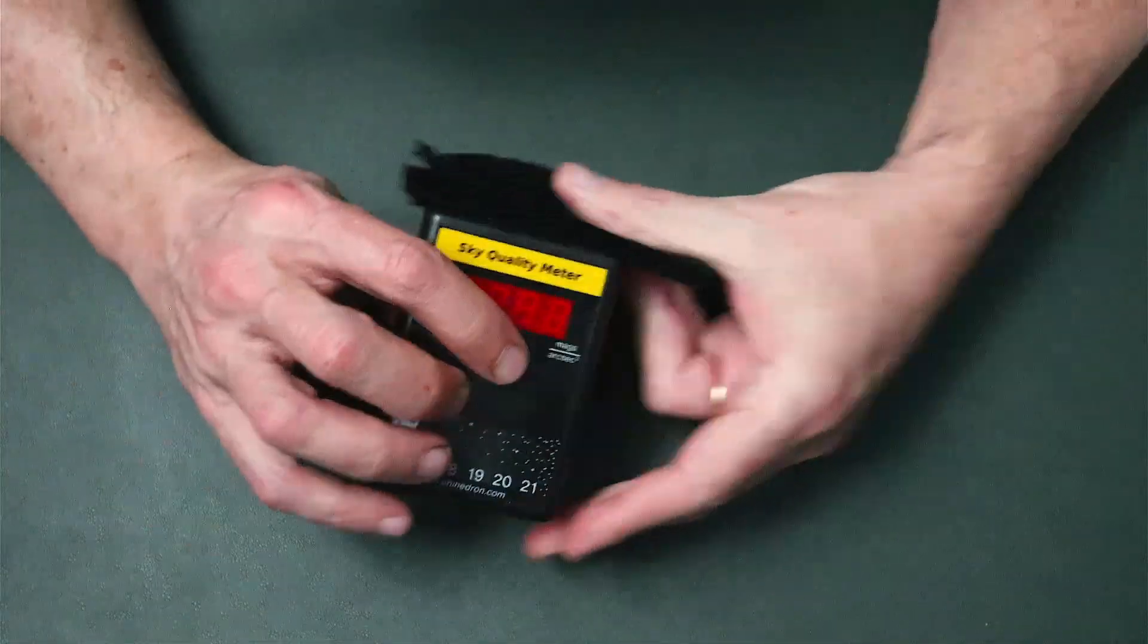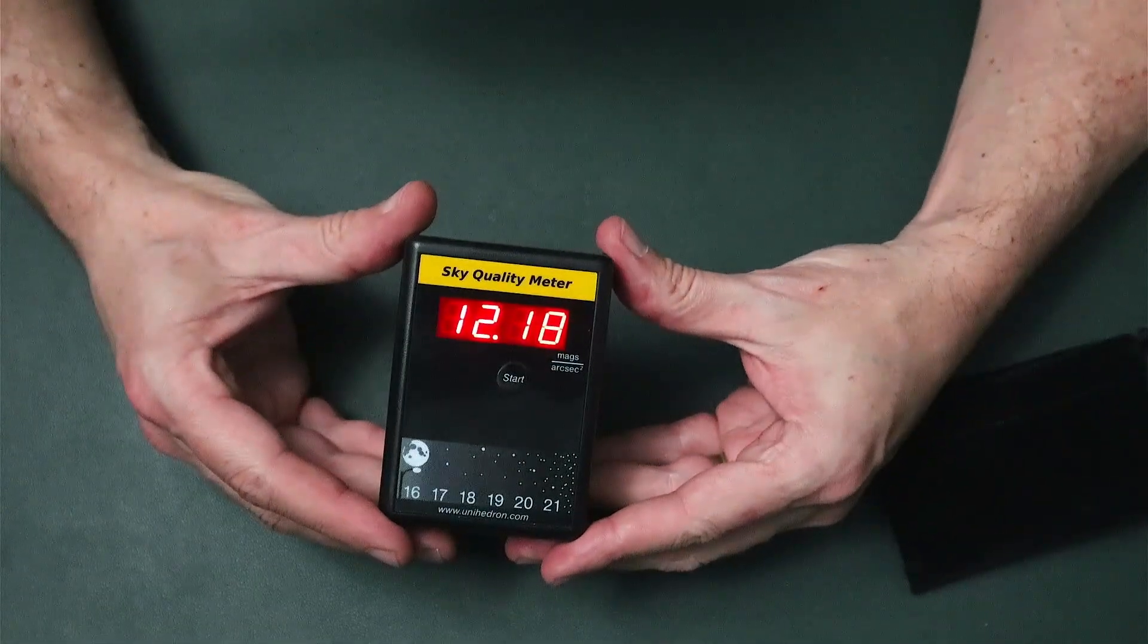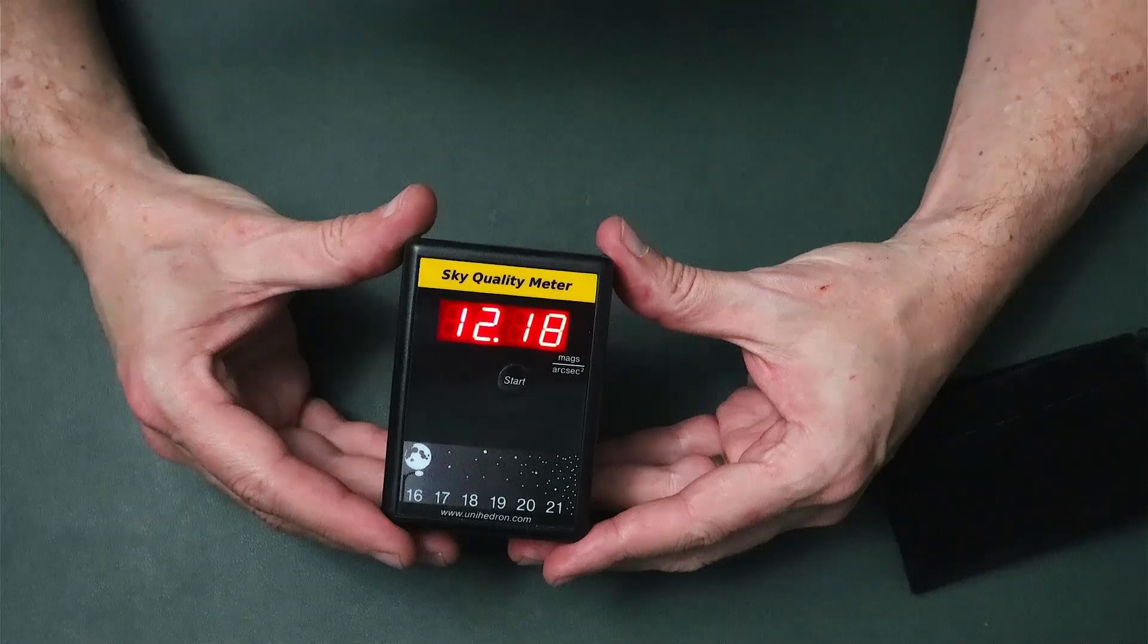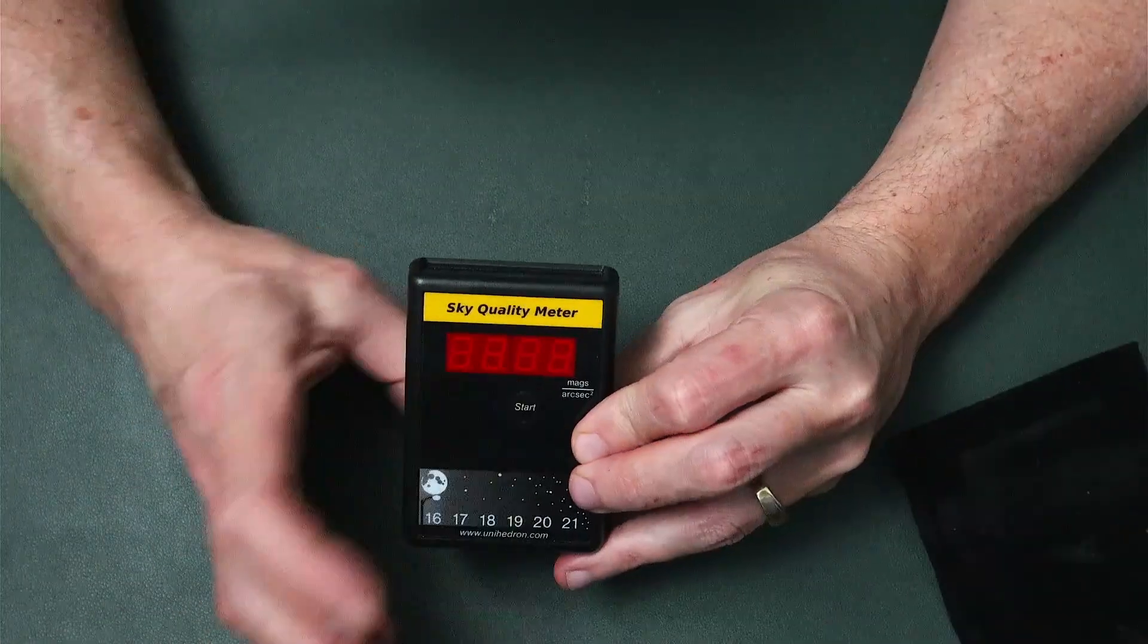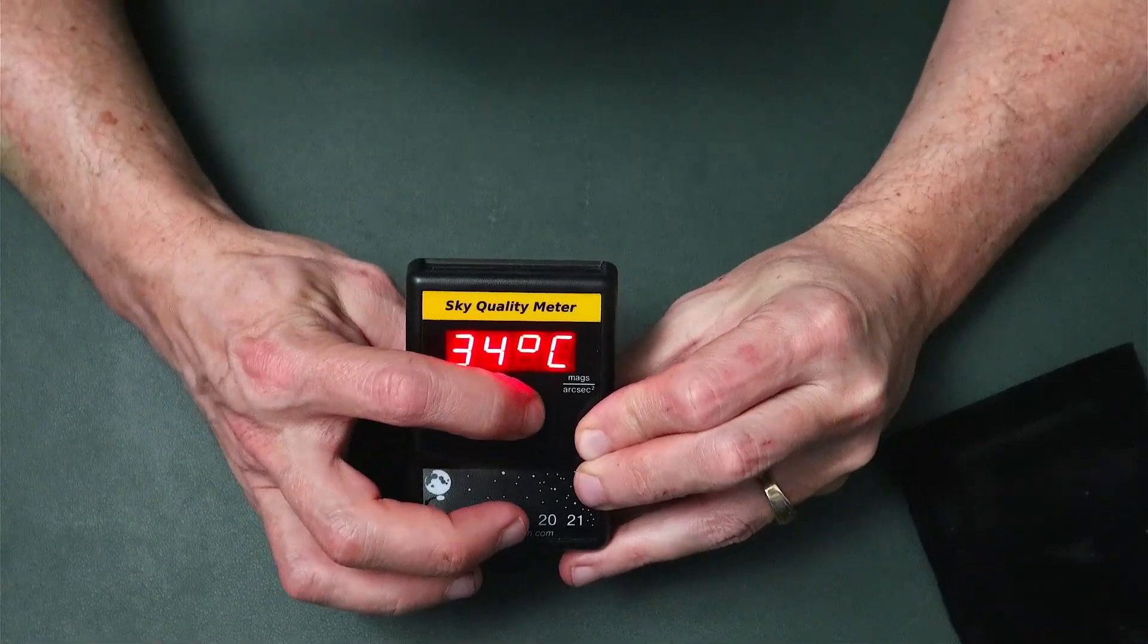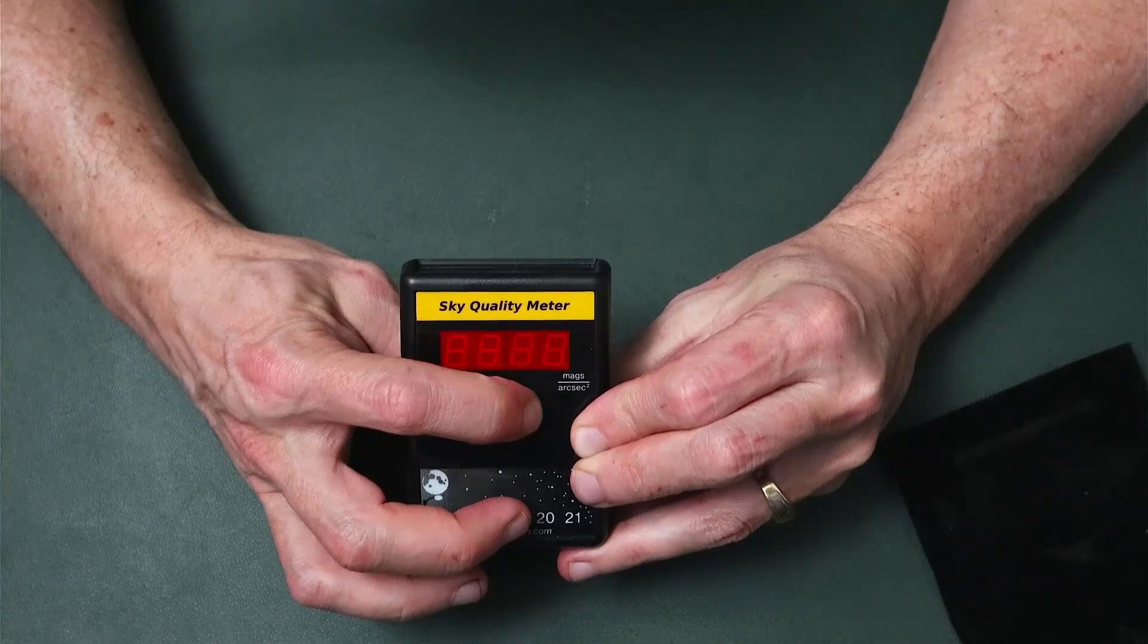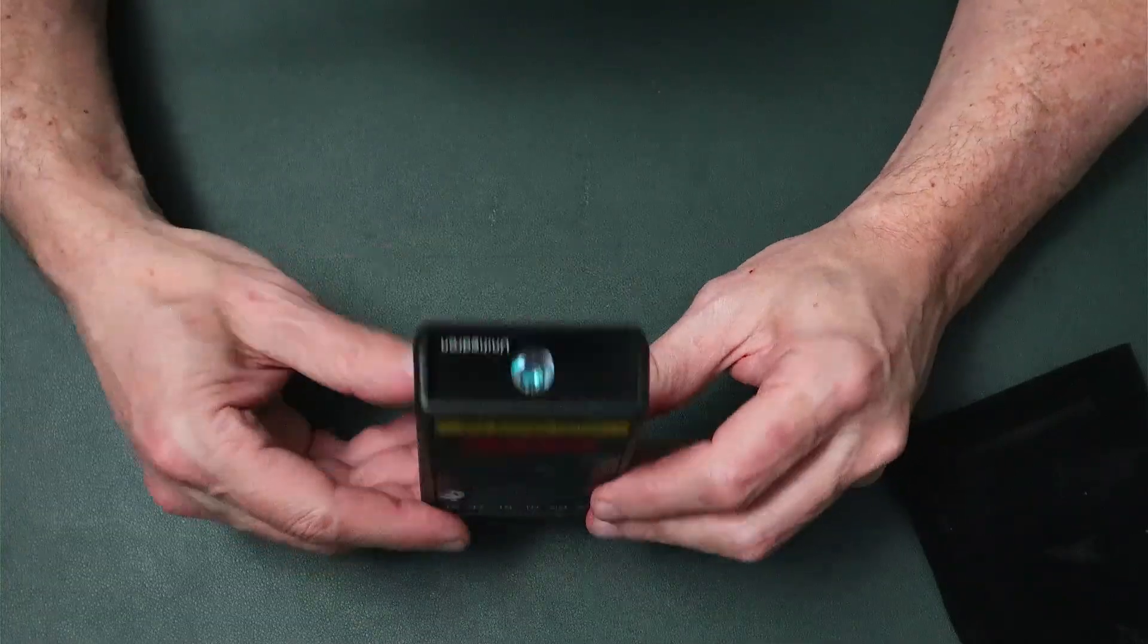Anytime you take a reading, after you push the start button, 10 seconds after it shows you your measurement, the display will turn off on its own. The other feature that it has is after it takes a reading, if you hold your start button down, it'll show you the temperature of the unit in Celsius and then Fahrenheit, and then the model number and serial number, and then shut off.